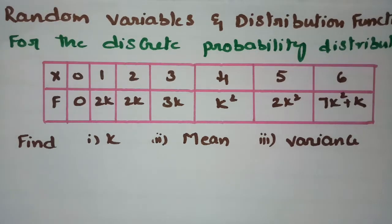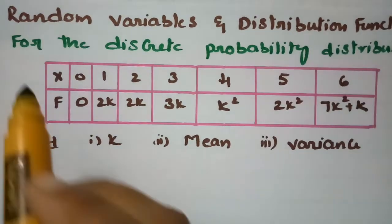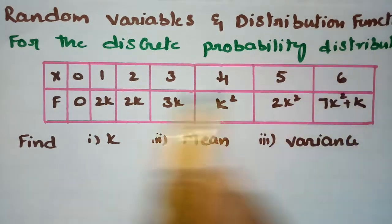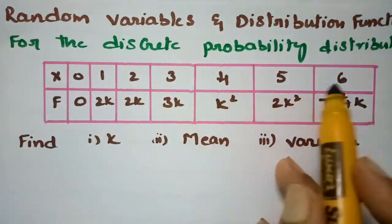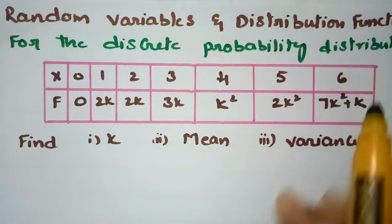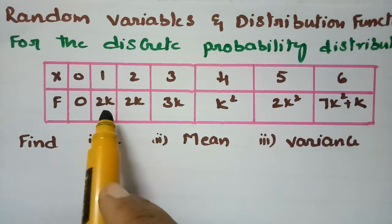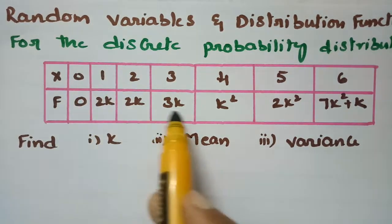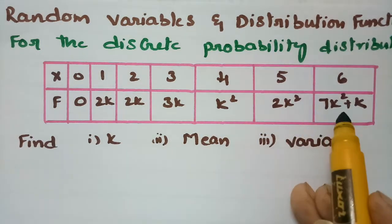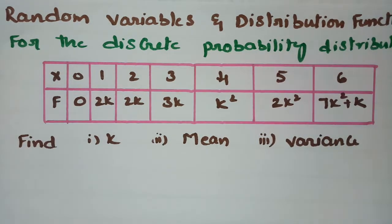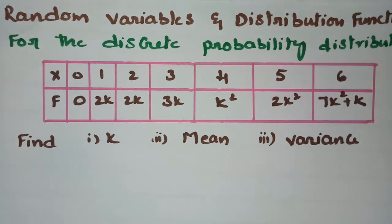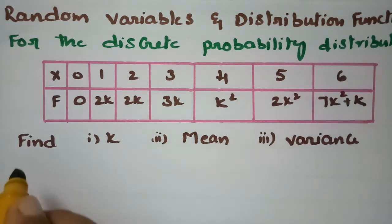In this video I am going to give the solution for an important problem from random variables and distribution functions. For the discrete probability distribution, the x values are given as 0, 1, 2, 3, 4, 5, 6 and the probability distribution function is 0, 2k, 2k, 3k, k², 2k², 7k² + k. We have to find the value of k, the mean, and the variance.